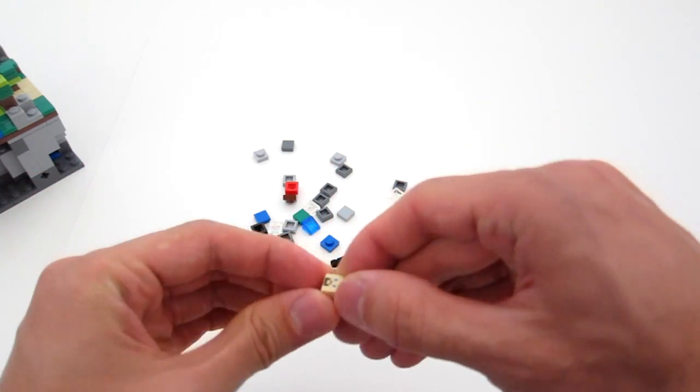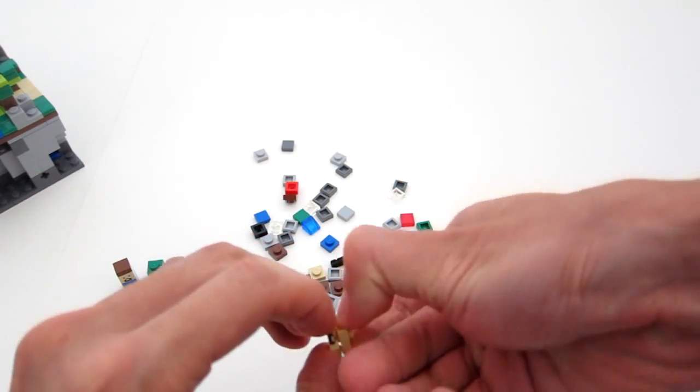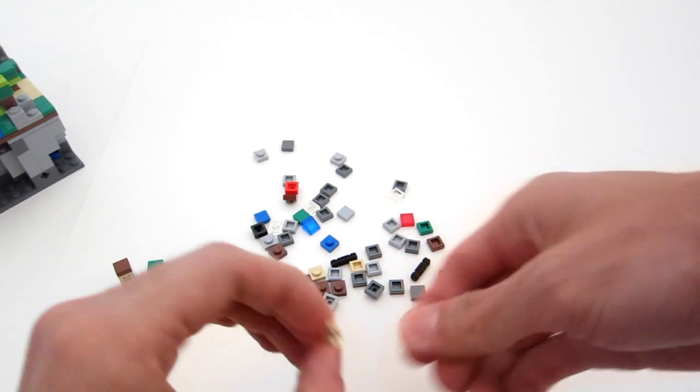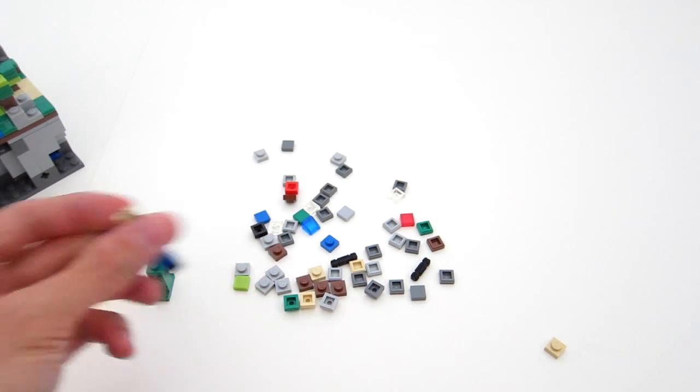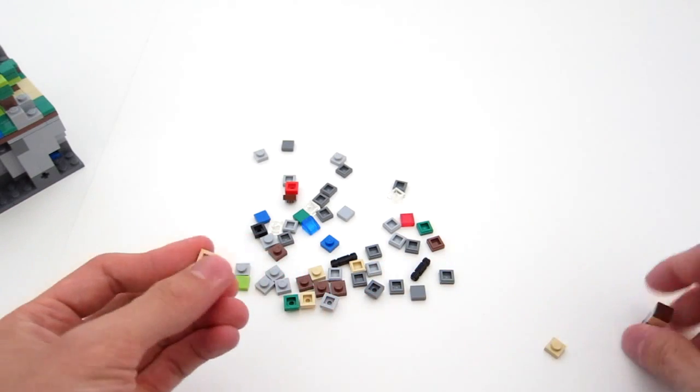And it even has an extra Steve's face, which it's useful because if you, I think for space builders, if you're just using this part, it's a nice decoration on your ship. And then since you have two, it makes for a nice symmetrical build.